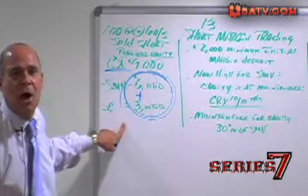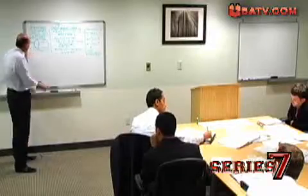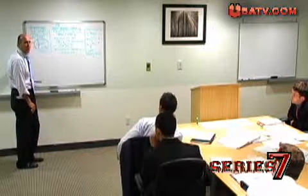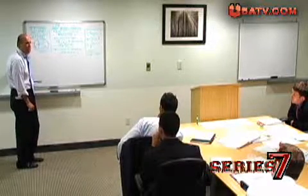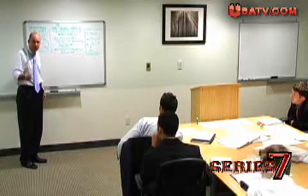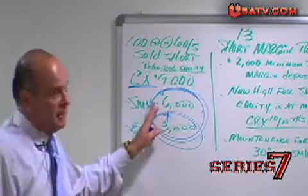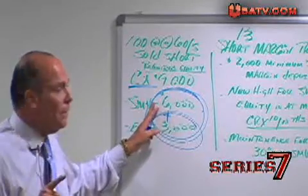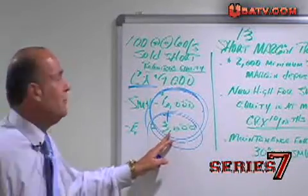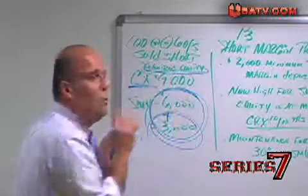More similarities: the actual equity in the account is always required to be 50% of the stock component — that defines required equity, whether it's 50% of the LMV or 50% of the SMV. Required equity here is $3,000; actual equity is $3,000. This account is in required equity.